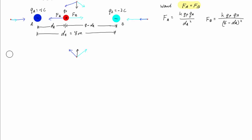And FB equals K times QP times QB divided by 8 minus dA all squared. We want FA equals FB. So K times QP times QA divided by dA squared equals K times QP times QB divided by 8 minus dA squared. Now we can try to solve for dA and find where the positive charge must be located to balance the two forces.